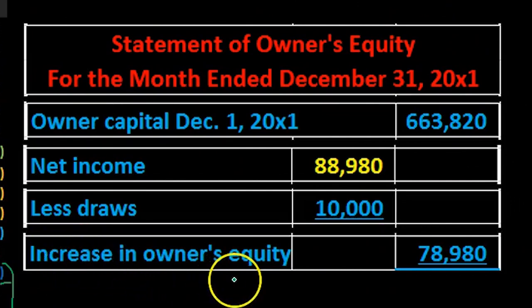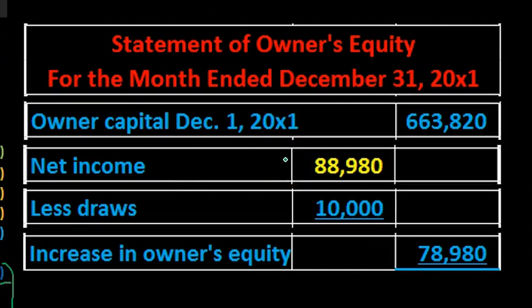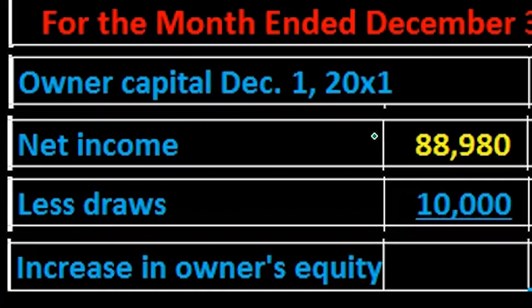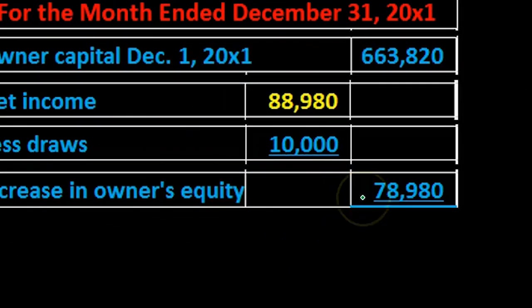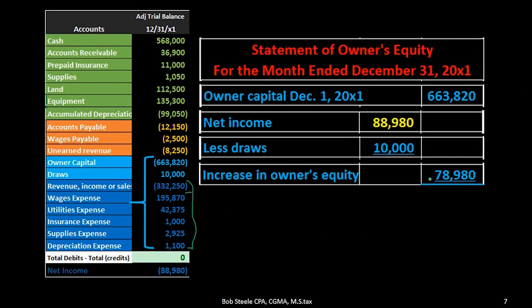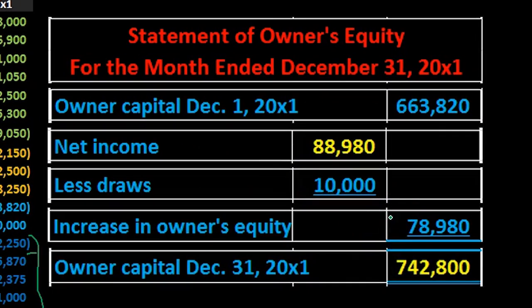Then we're going to pull that out to the outer column. We have an increase in owner's equity — it's really a net increase, but typically just called an increase. What we're doing is subcategorizing: here's what happened over the time period crunched into one number. Net income brought equity up, then draws brought it down; subtracting those two gives us the increase in equity. We put that in the outer column not because of debits and credits, but because of a subcategory function where the two items are calculated together.